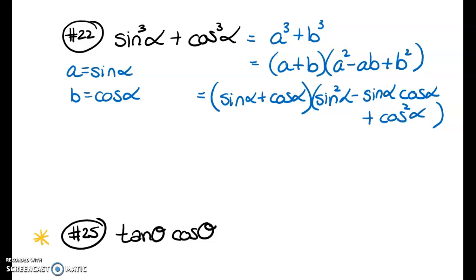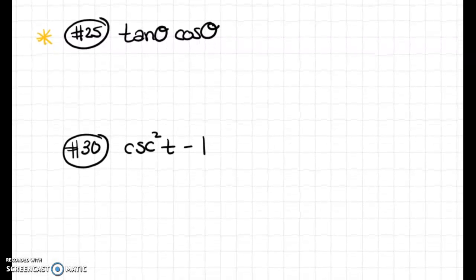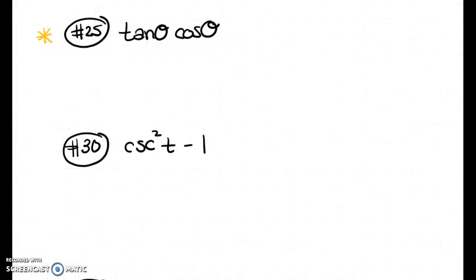Now we're moving on — not to verifications yet, but to simplifying expressions. Each should simplify to a constant, a single function, or a power of a single function. We'll manipulate our identities, and the first hint I'll use is to write everything in terms of sine and cosine.